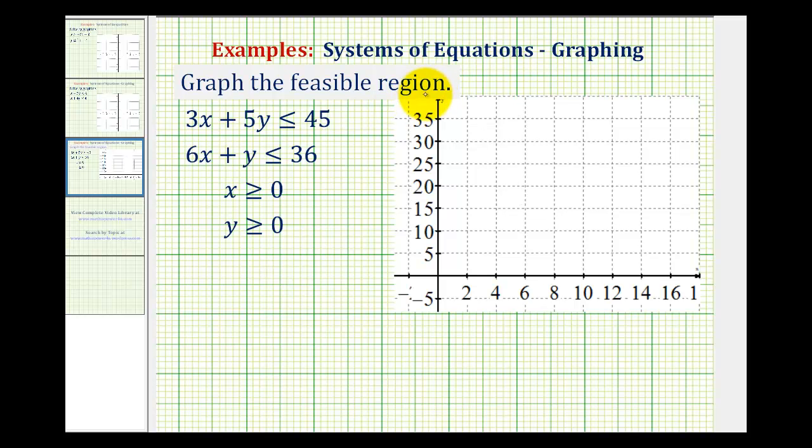We want to graph the feasible region given these four inequalities. The feasible region is the region in which the ordered pairs would satisfy all four of these inequalities. So what we'll do is graph and shade each of these inequalities and then find the region that is shaded four times.